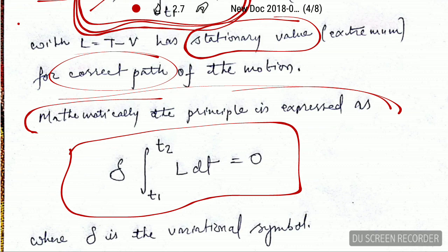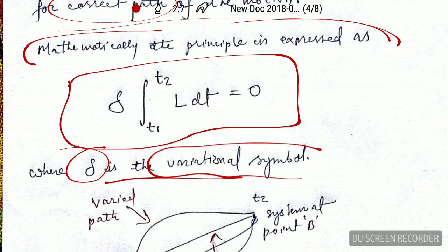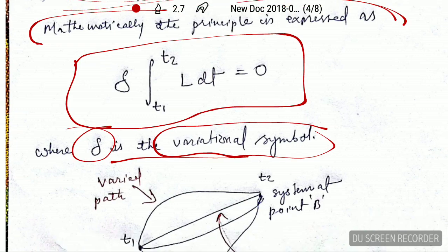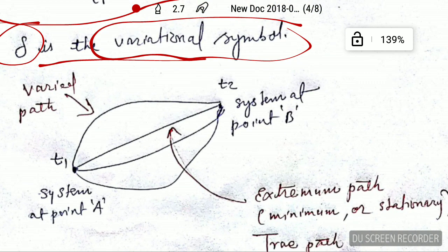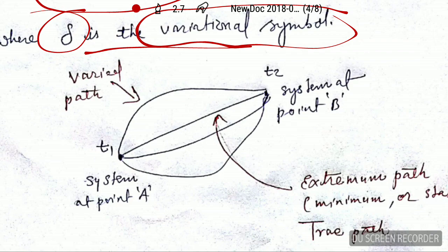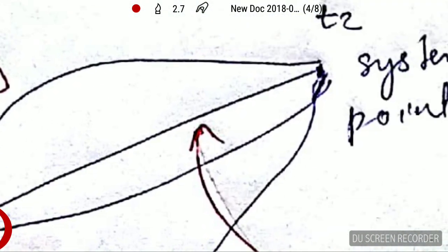Here, delta (δ) means variation — it is the variational symbol. Now here is a simple graph to help you understand. The system was initially at point A, and after some time it moves to point B.